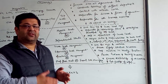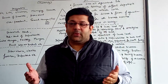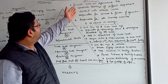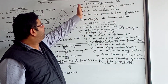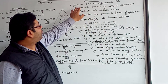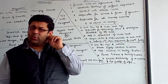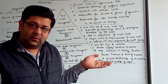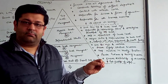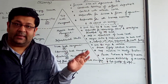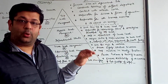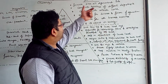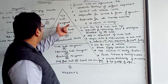Top level management performs various functions. First is formulating overall organizational goals. No organization can survive without an objective — every organization has certain goals. For example, a company may aim to get maximum profit, while an NGO may aim at imparting free knowledge. These goals are set by the top level management.